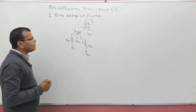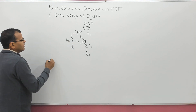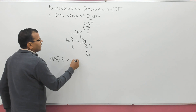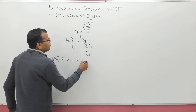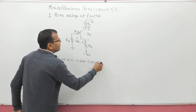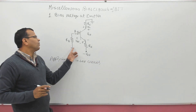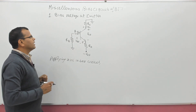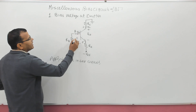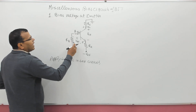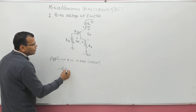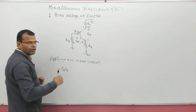Now let us apply KVL in the base circuit. The main thing is you should know how to apply KVL in the circuit. Always start from one point and reach up to the next. When you start from here, remember the base current is moving in this direction. The voltage drop terminal will be plus, and the other end minus, so I will be taking plus-to-minus voltage fall as negative. So: minus RB × IB.